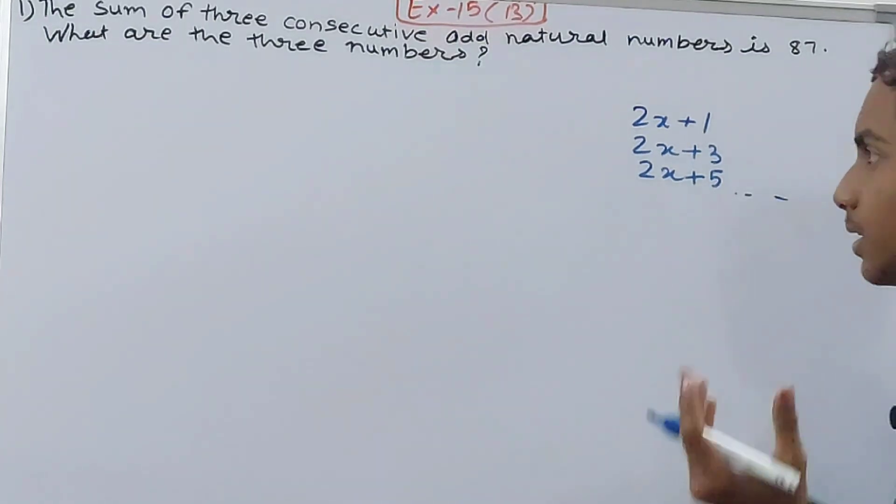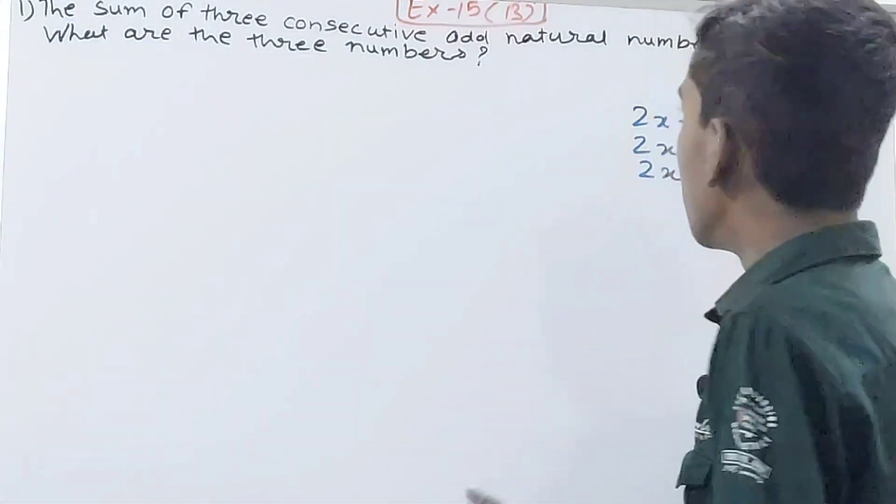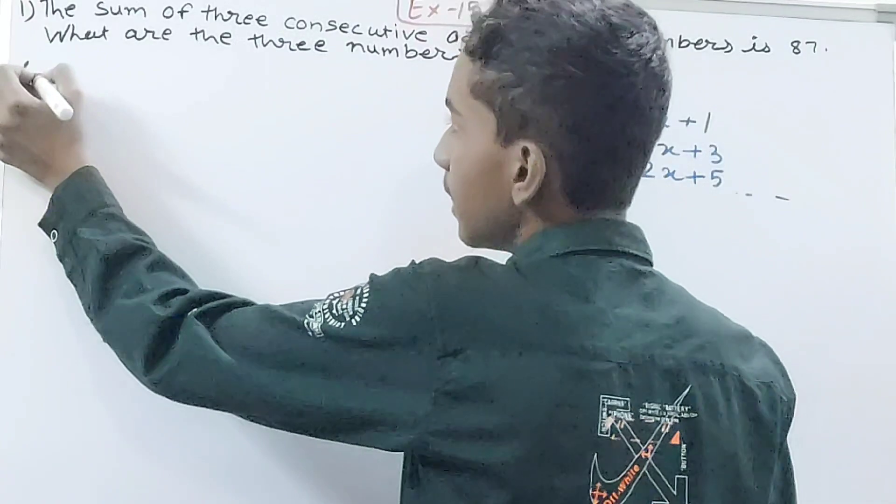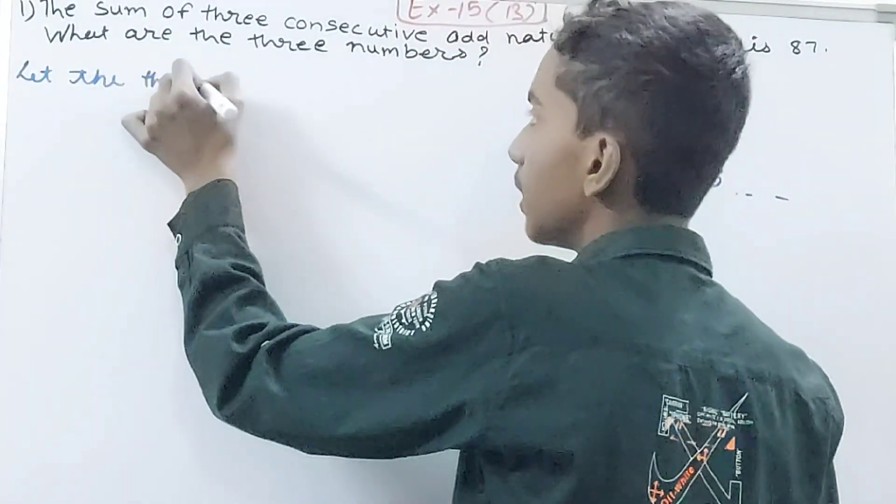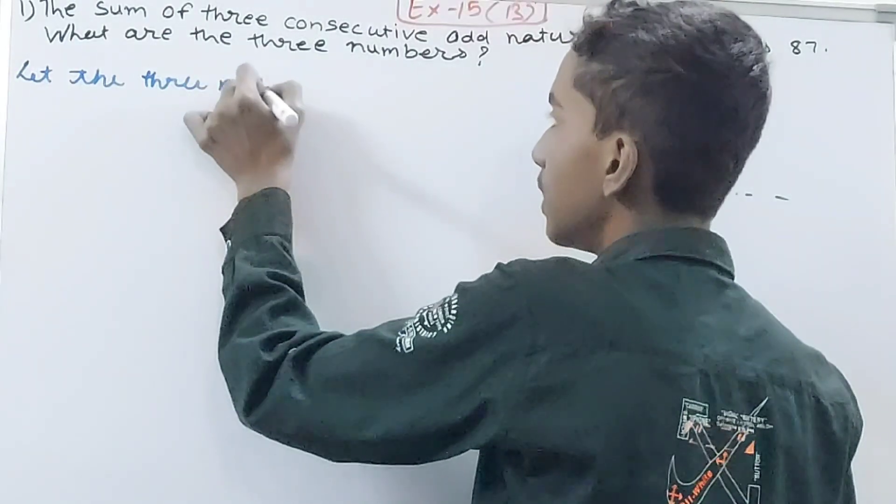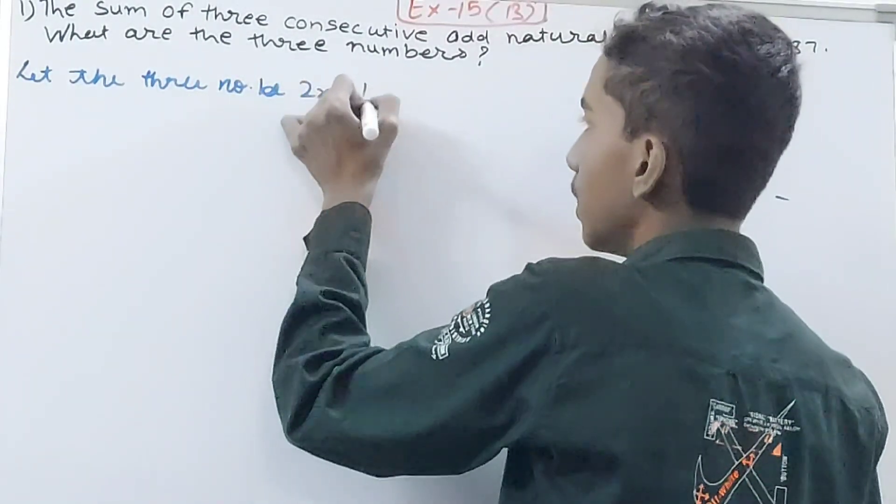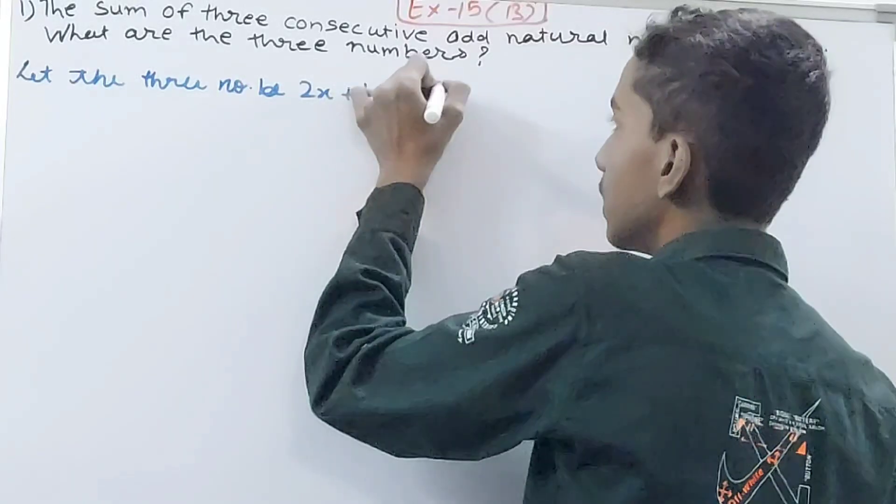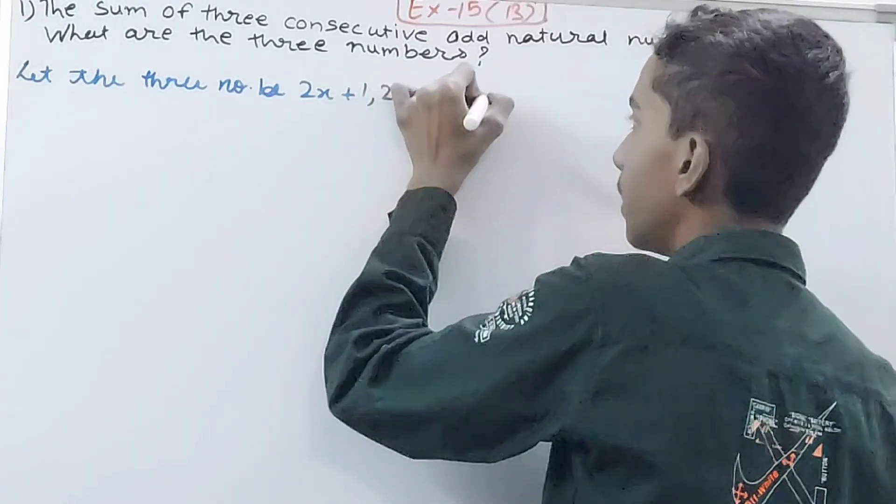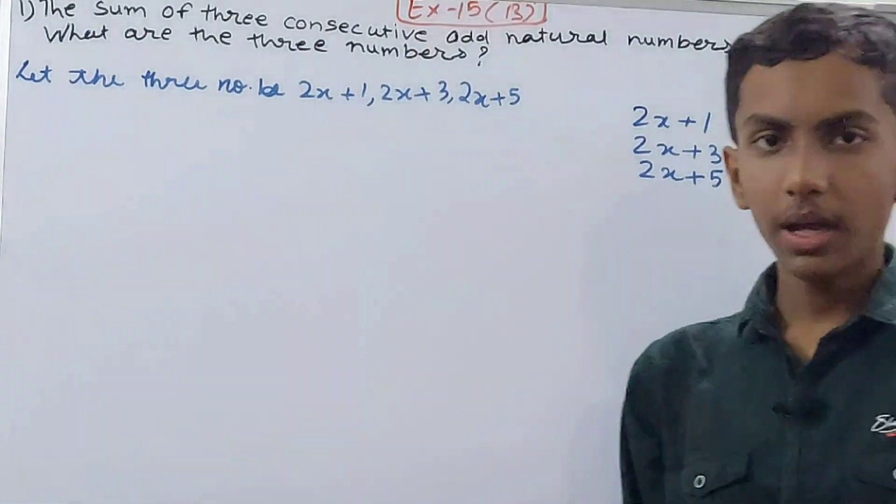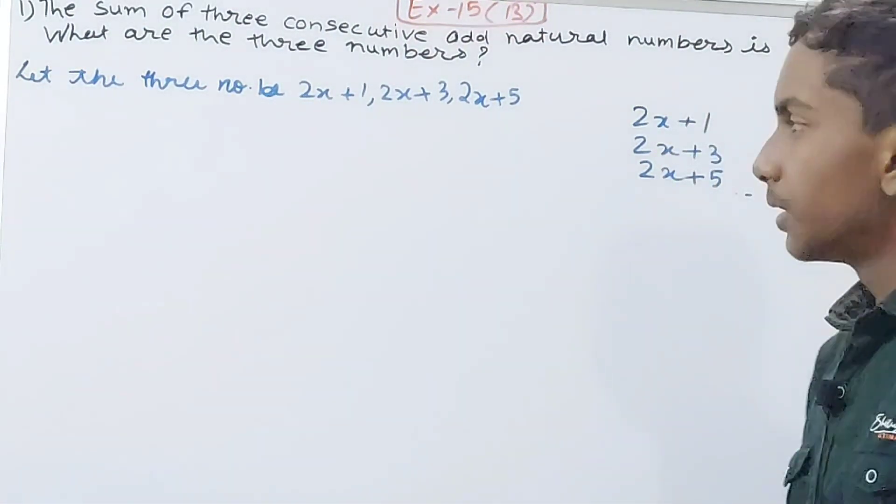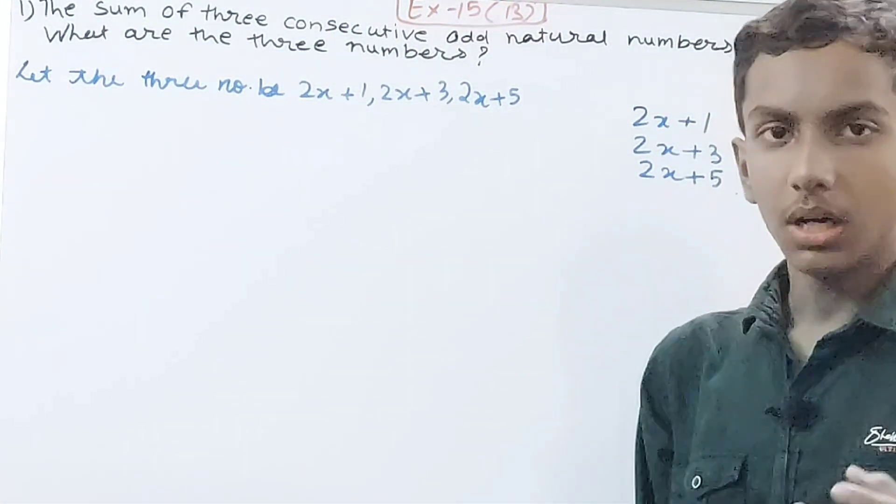Now same thing here, so let the three numbers be 2x+1, 2x+3, 2x+5. These three are my consecutive odd numbers. Now the sum of all these three will be equal to 87.